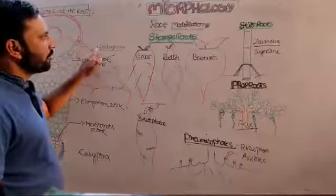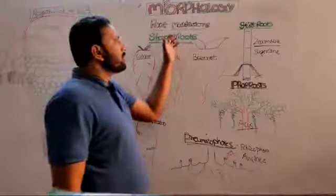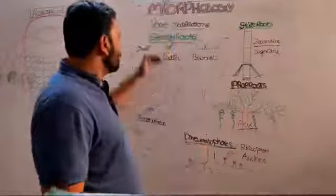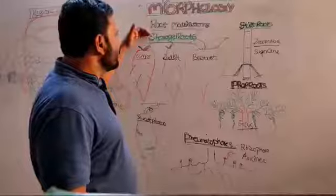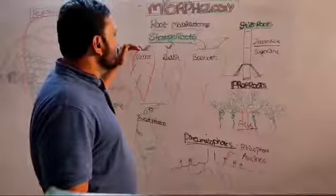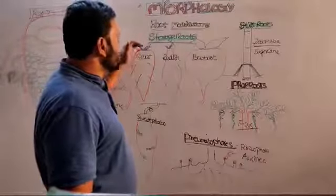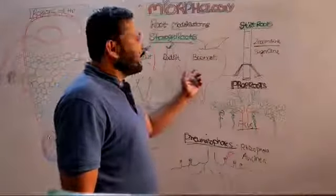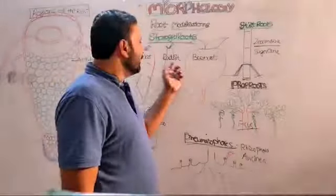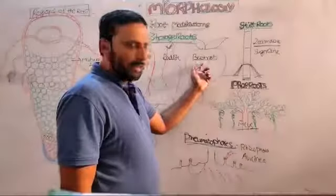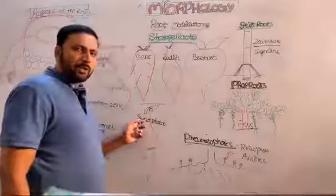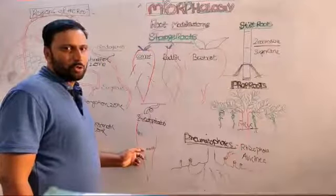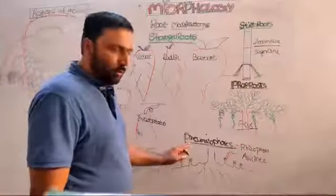Root modifications include storage roots, stilt roots, prop roots, and pneumatophores. Storage roots store food materials in the root — examples are carrot, radish, and beetroot, which are dicot plants with taproot storing food. In Ipomoea (sweet potato), it is a dicot plant but the adventitious root stores food materials.